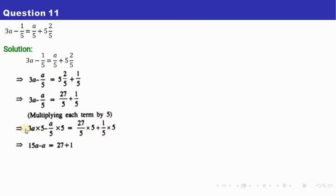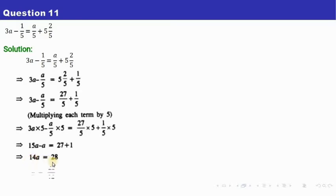So as I said, 3 times 5 is 15, giving us 15a. Only a is left here, only 27 is left, and only 1 is left. Simplifying: 15a minus a is 14a, and 27 plus 1 is 28. So you will divide both sides by 14 — or take this 14 to the denominator — giving 28/14, and after cancellation the value of a turns out to be 2.